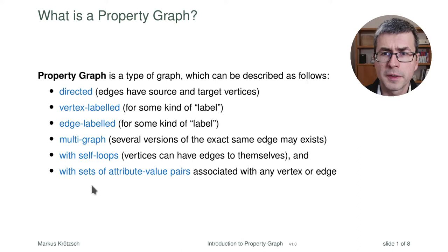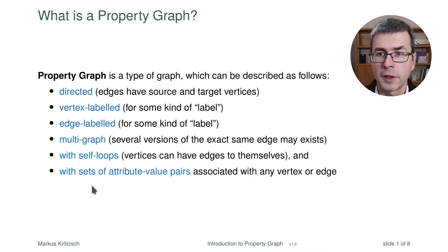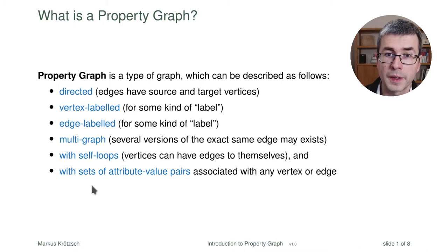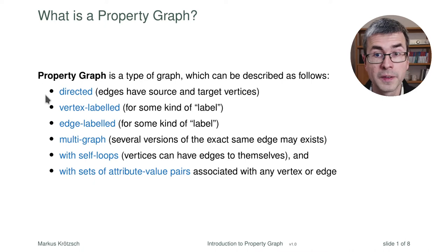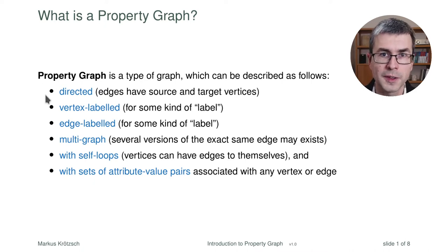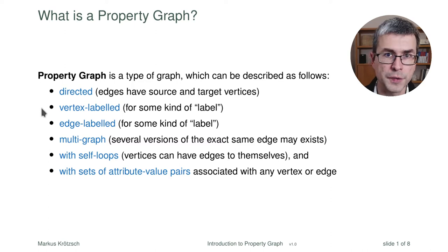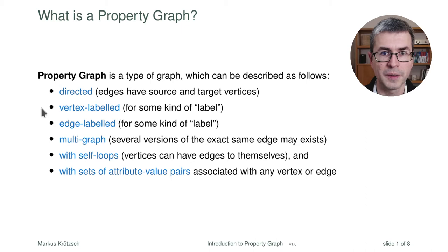Technically, somewhat semi-mathematically, I could characterize it as follows. A property graph is a type of graph which has a number of features. First feature: it is directed. Edges have a source and a target, same as in RDF. This makes a lot of sense in practice — when you want to model something, you mostly want to have direction.